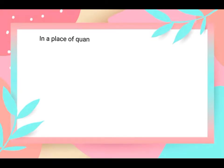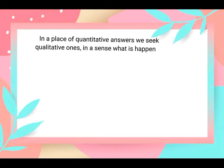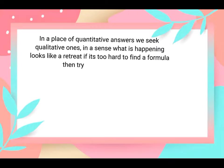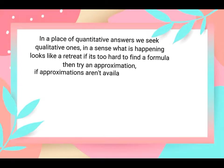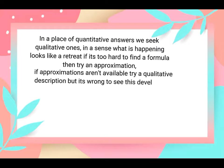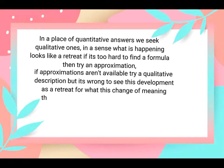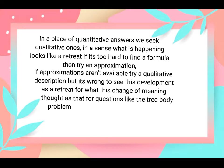In place of quantitative answers, we seek qualitative ones. In a sense, what is happening looks like a retreat: if it's too hard to find a formula, try an approximation; if approximations aren't available, try a qualitative description. But it is wrong to see this development as a retreat, because what this change of meaning tells us is that for questions like the three-body problem, no formula can exist — but there are still ways to solve them.